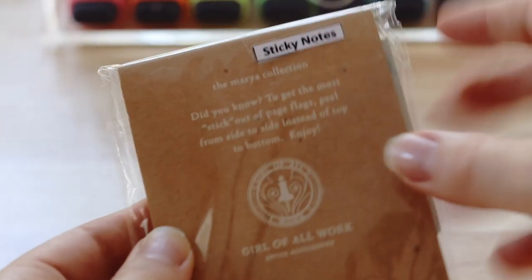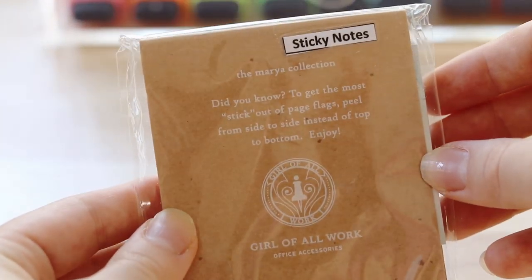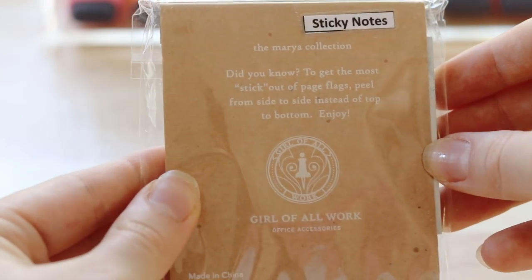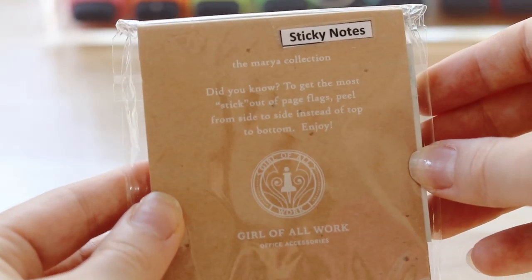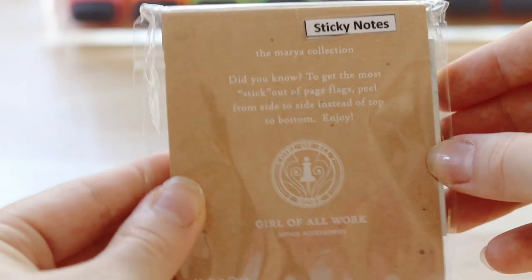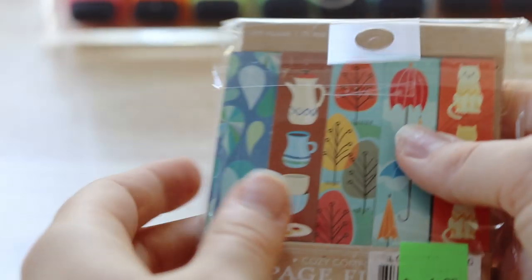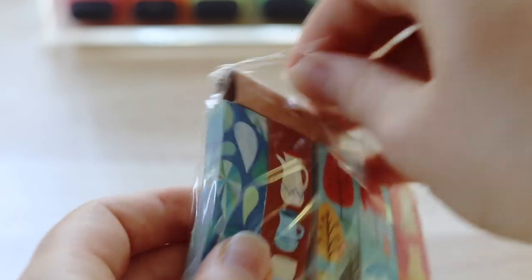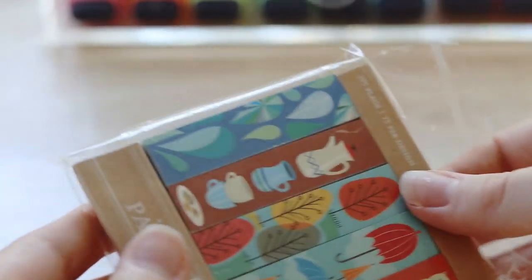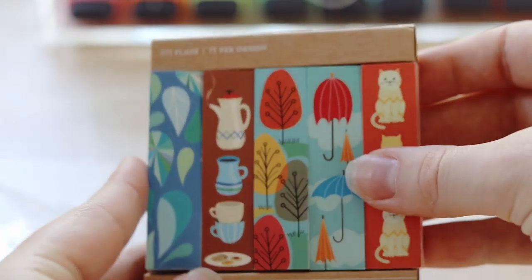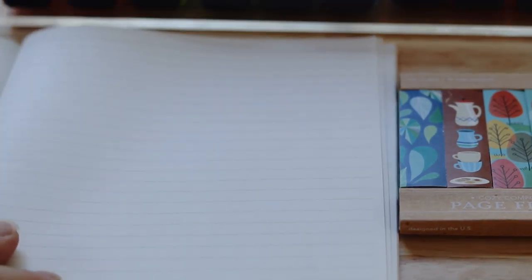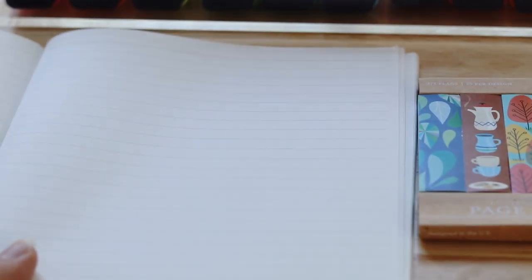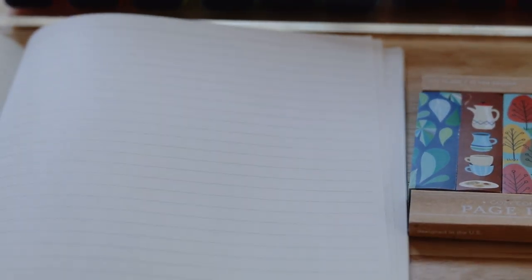The first item that instantly caught my attention were these cozy comforts page flags by girlofallwork. On the back, it says, did you know, to get the most stick out of page flags, peel from side to side instead of top to bottom. These page flags really caught my attention because I love the designs, I love how cozy they look, they really remind me of fall, kind of Gilmore Girl vibes. My favorite ones are the teapot, since I am the biggest tea fan in the world. I'm definitely going to be using them for my notebooks, for my classes, probably one per section or one per chapter.